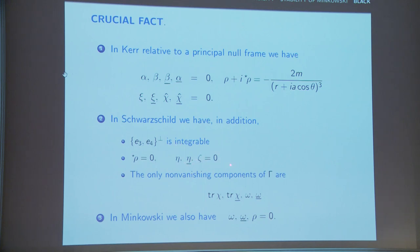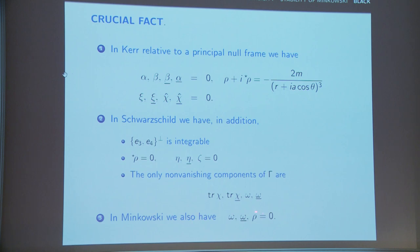The important thing is to note that if you use a principal null frame, many things really vanish — that's why principal null frames are so important. In Minkowski space, going from Kerr to Schwarzschild, you get even more simplification: all components of the curvature are zero, and the only non-trivial components are chi and chi-bar, which have very simple geometric meaning.